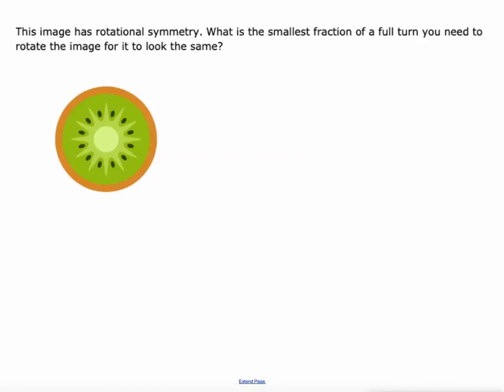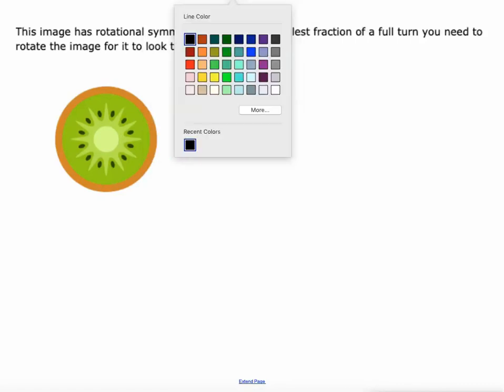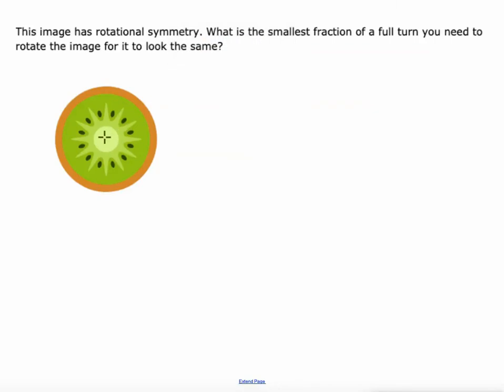I think I'm going to use some lines here. So the way I usually look at this is I find the center of rotation, and then I look and see there's a piece of this figure that is identical to all the other pieces.